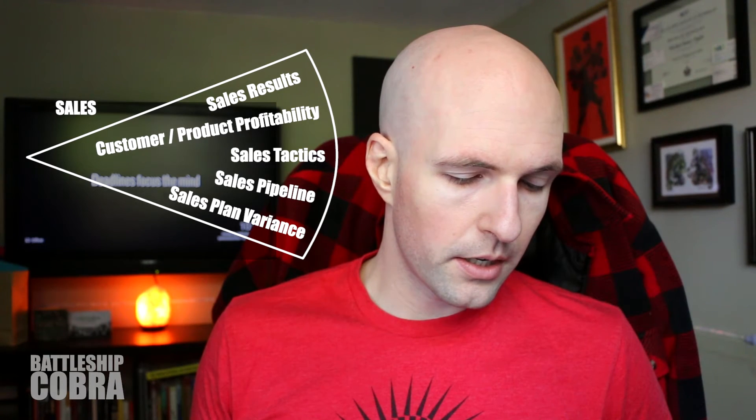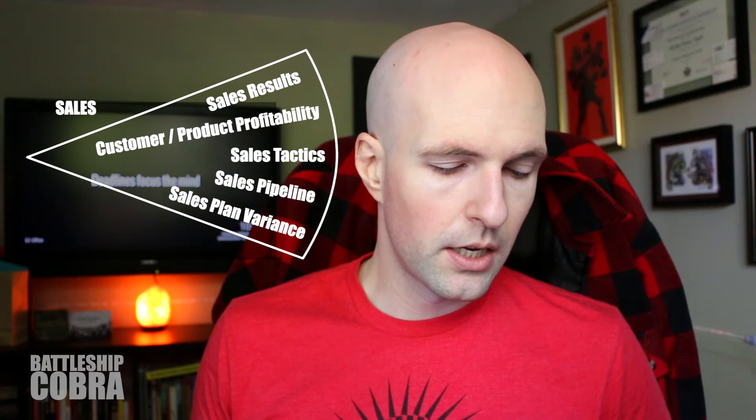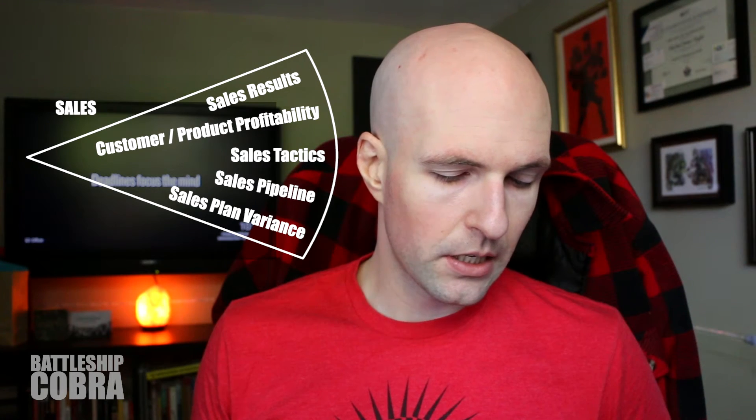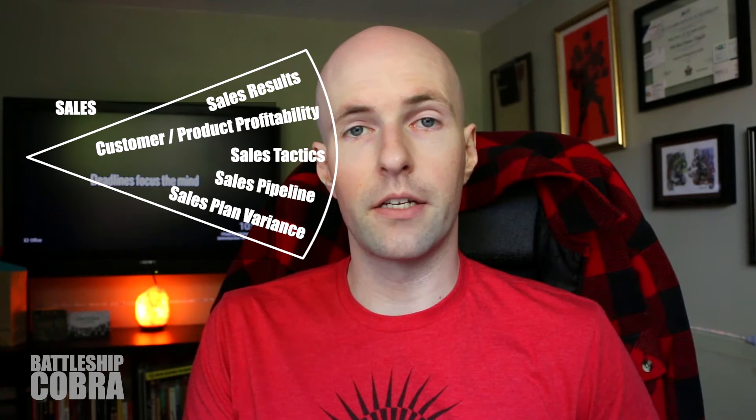Within Sales, you have sub-areas. Within the Sales decision area you're going to have: Sales Results, Customer and Product Profitability, Sales Tactics, Sales Pipeline, and Sales Plan Variance. Each of those sub-areas then has Goals, Metrics, and Dimensions — what I'm going to call 'GoMeds.' This framework shows how they link together and how they link back to Finance.